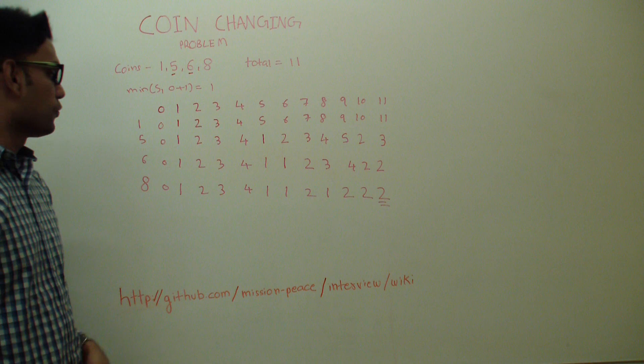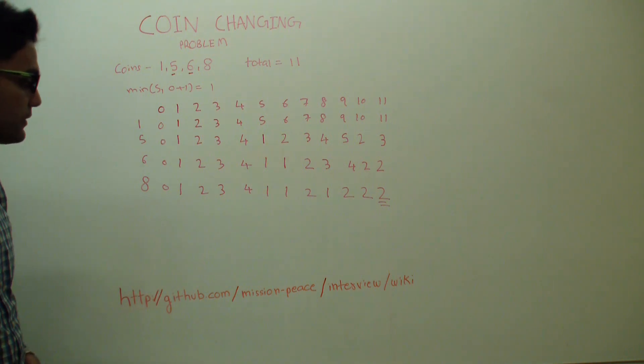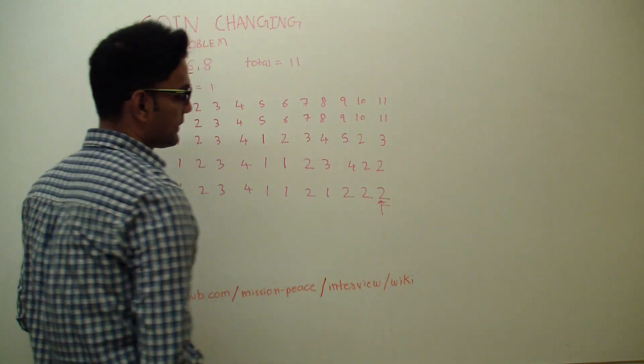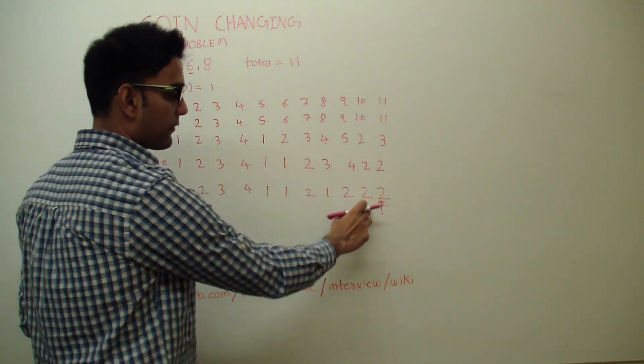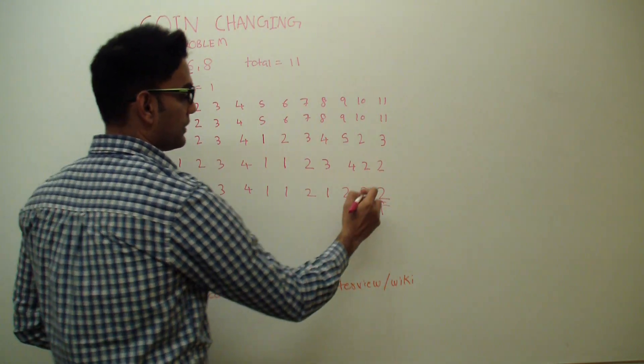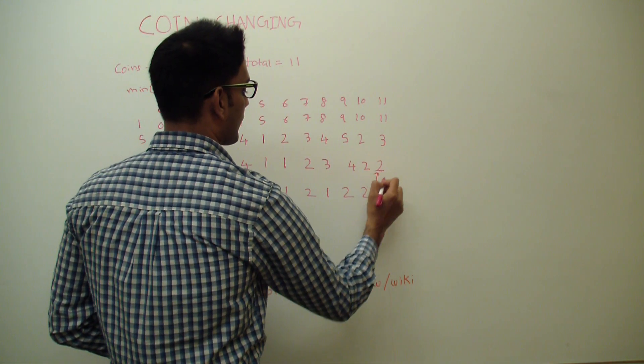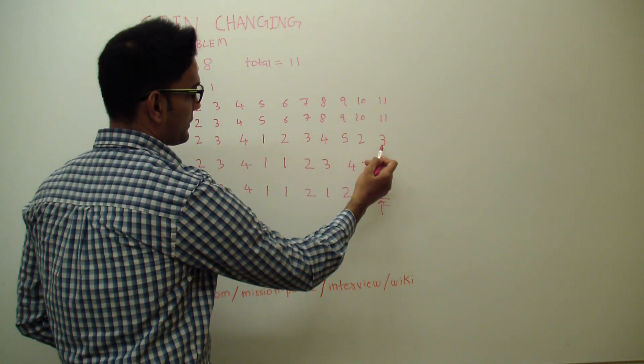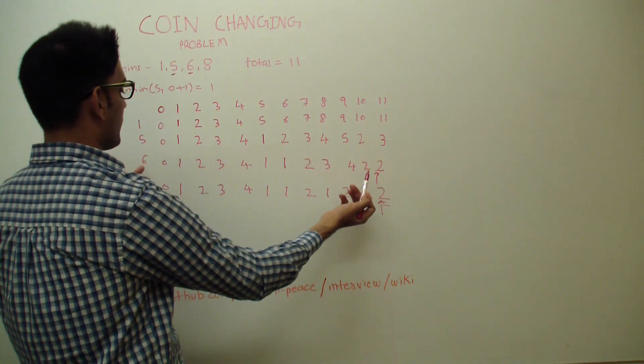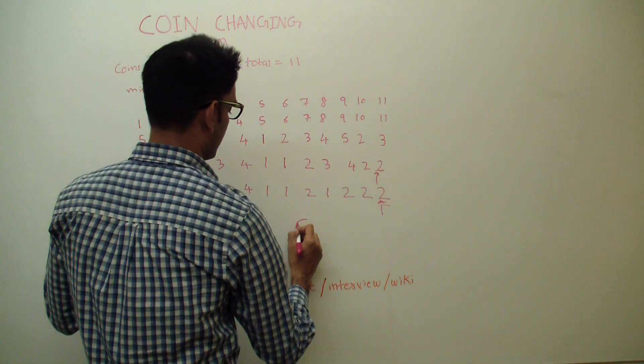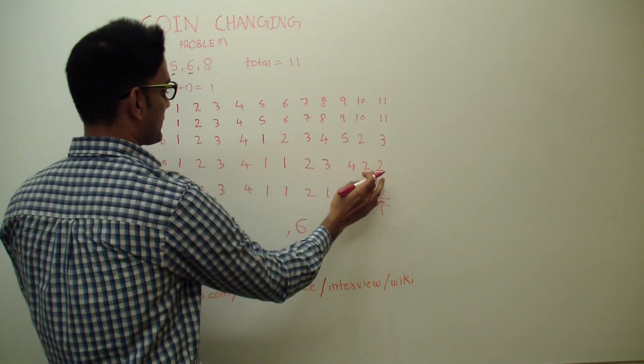Now if someone asks you what are these coins, how do you get the answer? So we'll start from here. We'll say where is this 2 coming from? Is it coming from the top or is it coming from this side? Clearly this guy is coming from top. So we go up here. Where is this 2 coming from? This 2 is not coming from the top. So this 2 has to be coming from somewhere here. So we know that 6 is at least in the answer. So 6 and we go back 6 steps from here.